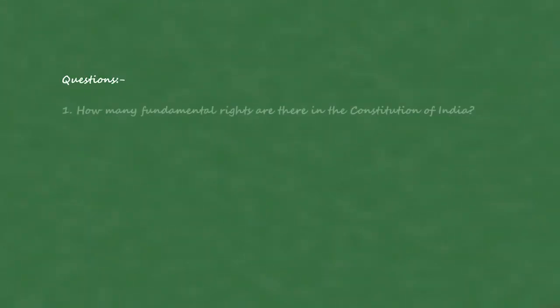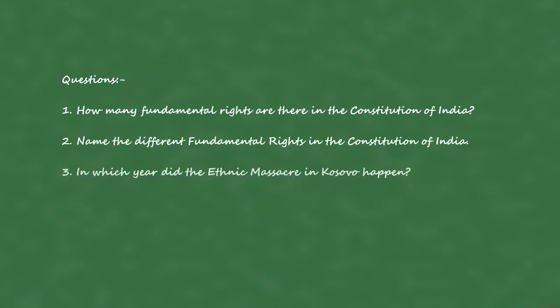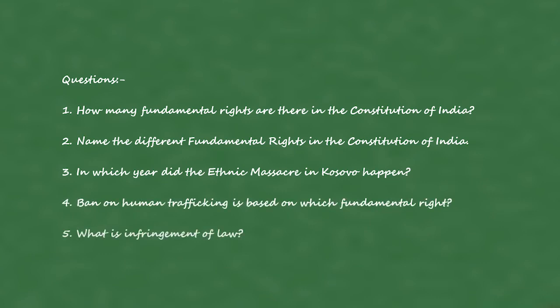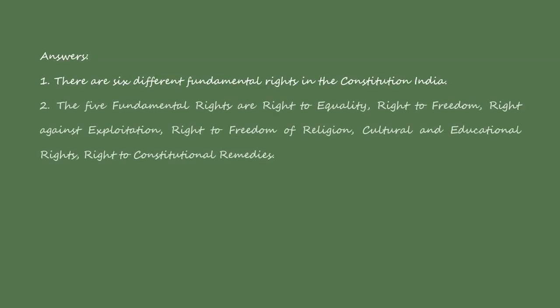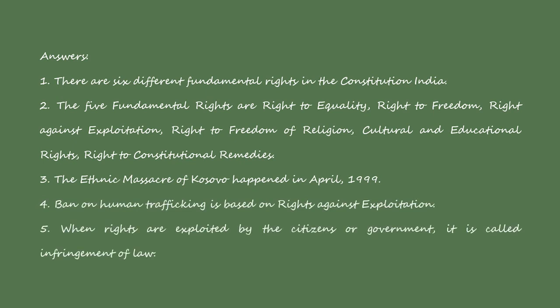Students, it's time for some exercises. How many fundamental rights are there in the constitution of India? Name the different fundamental rights. In which year did the ethnic massacre in Kosovo happen? Ban on human trafficking is based on which fundamental right? What is infringement of law? The answers: there are six fundamental rights — right to equality, right to freedom, right against exploitation, right to freedom of religion, cultural and educational rights, and right to constitutional remedies. The ethnic massacre of Kosovo happened in April 1999. Ban on human trafficking is based on rights against exploitation. When rights are exploited by citizens or government, it is called infringement of law.